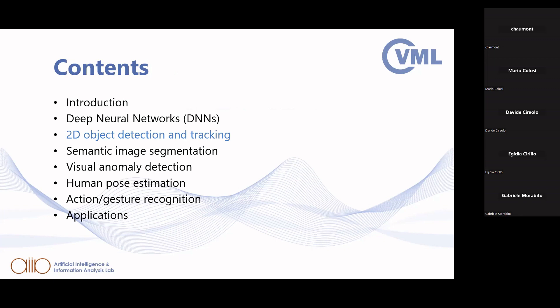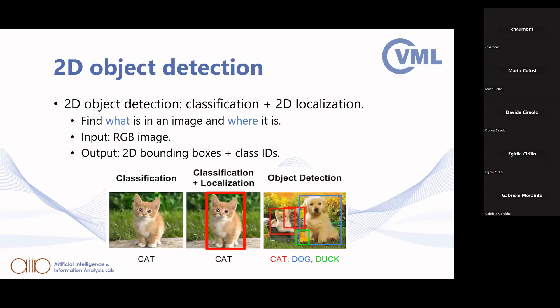Now let's look at the tasks that can be performed using these networks. First, 2D object detection, which involves both classification and localization — finding what is in the image and where it is. These algorithms typically use an RGB image as input and output a 2D bounding box locating the object and a class ID identifying which object is detected.